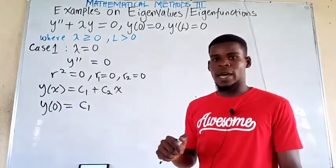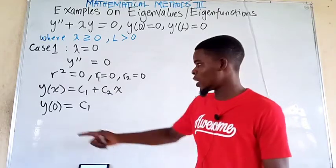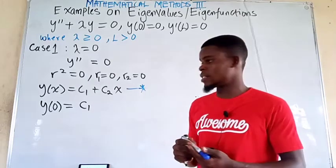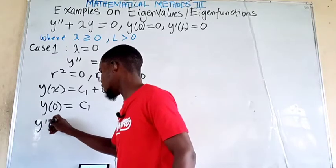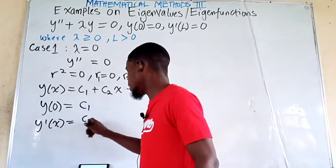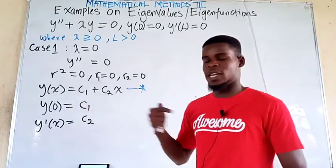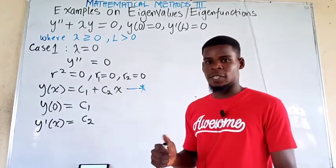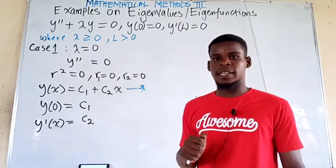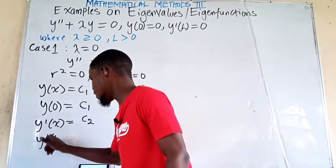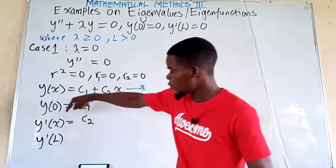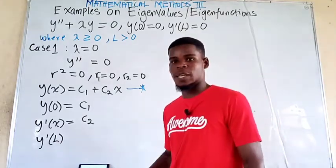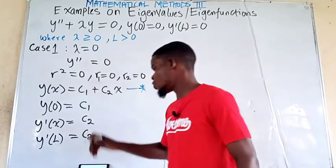We also need y prime evaluated at l. Differentiating y of x equals c1 plus c2 x gives y prime of x equals c2. Since the derivative is a constant function, y prime evaluated at any point — including l — gives c2. From the boundary condition y prime at l equals 0, this is still c2.